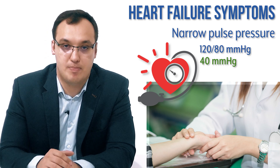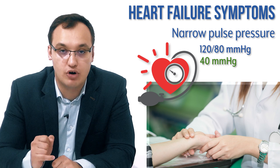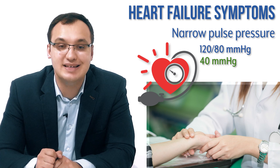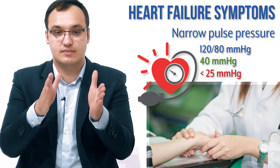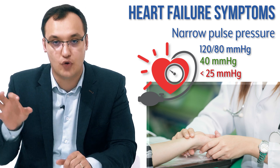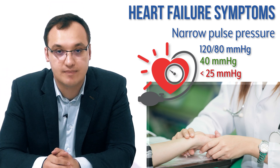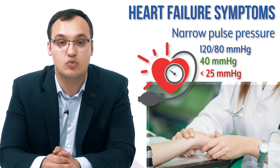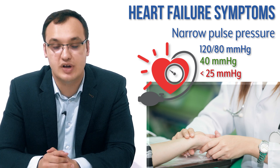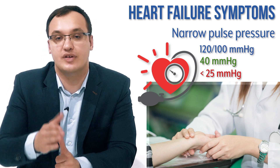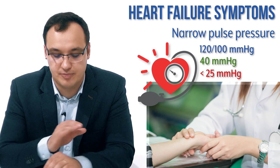In narrow pulse pressure — as seen in heart failure — this pulse pressure is less than 25. Normal is 40, but in heart failure it's less than 25. That would mean, for example, a systolic of 120 and diastolic of 100 — a very narrow pulse pressure.